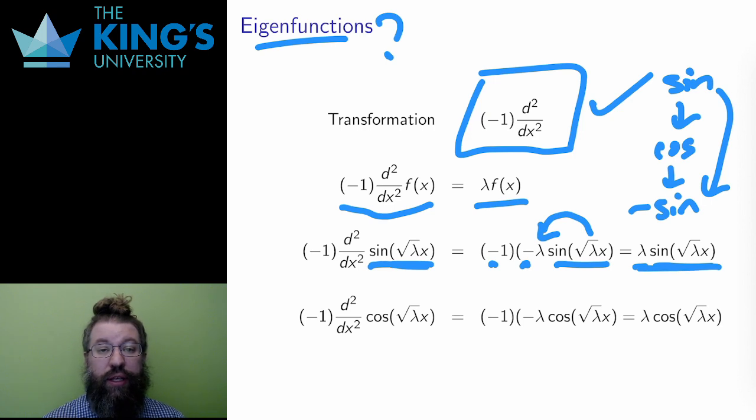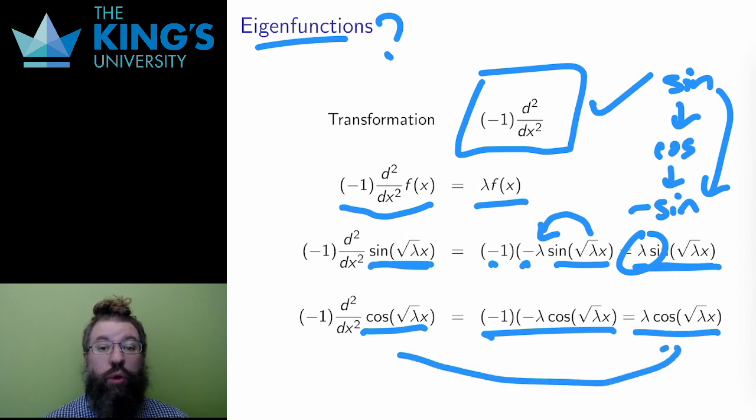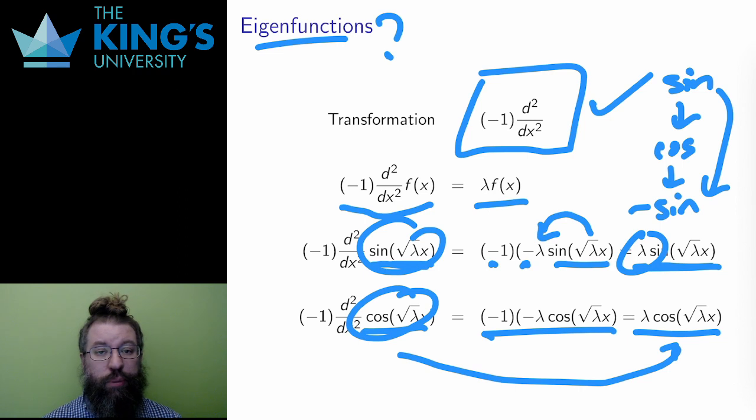If I apply this particular derivative, I get the original function multiplied by a constant. Similarly, I can do this with cosine, and I'll leave you to double-check the derivatives if you wish. In this case, there are two linearly independent eigenfunctions, sine and cosine. Sine is not a multiple of cosine, nor is cosine a multiple of sine, so for any λ, there are two linearly independent eigenfunctions.